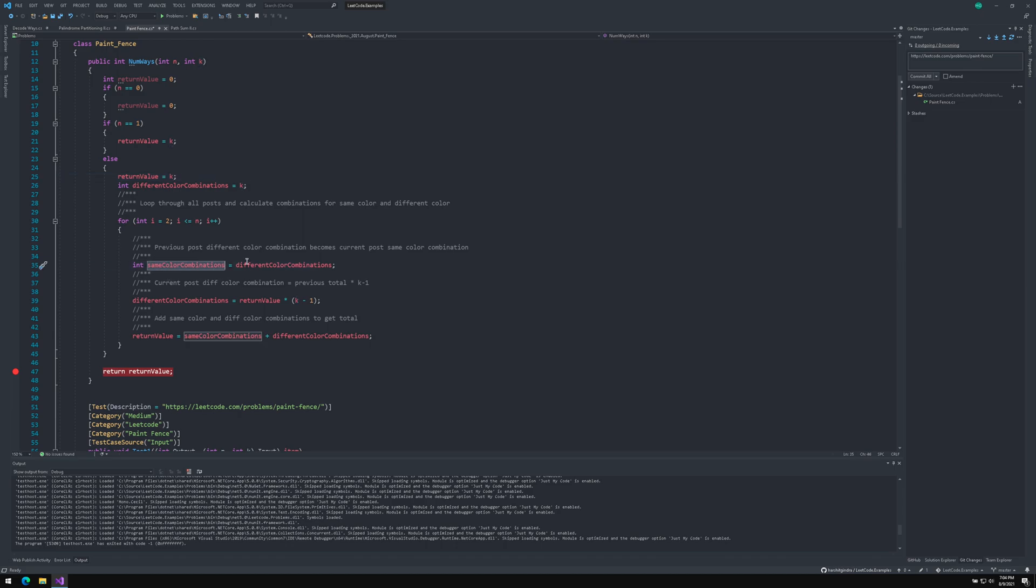We first save the total different color combination in a variable called same color combination. Then we calculate the different color combination, which is equal to the total that we calculated in the previous post multiplied by K minus one. And after getting this value, we then add it with the same color combinations and then save it in this variable return value. I have added few comments as well, which makes it a little bit easier to read and understand. You can find this code on my GitHub repository. I will be adding the link in the description below.